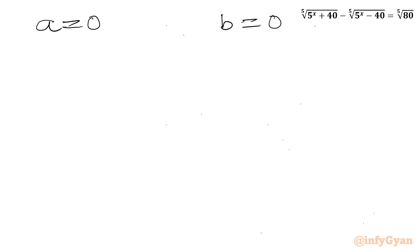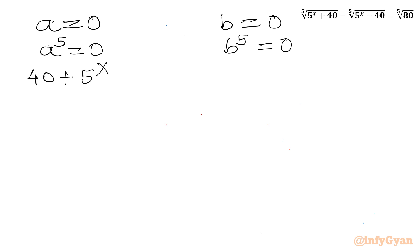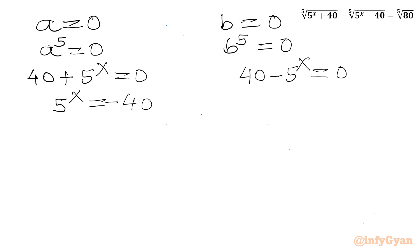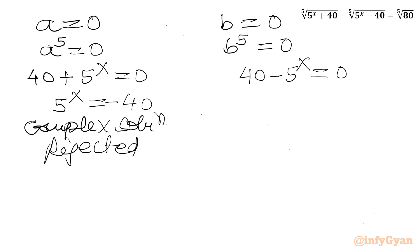Two cases remain: A equals 0 and B equals 0. If A equals 0, then A⁵ equals 0, so 40 + 5^x equals 0, giving 5^x equals −40. This yields only complex solutions, so we reject it. If B equals 0, then B⁵ equals 0, so 40 − 5^x equals 0, giving 5^x equals 40.